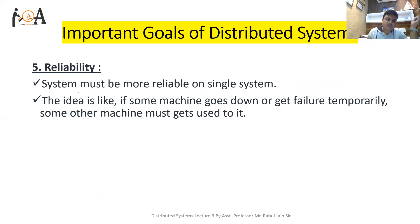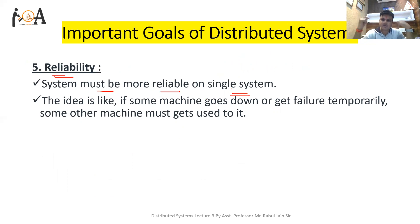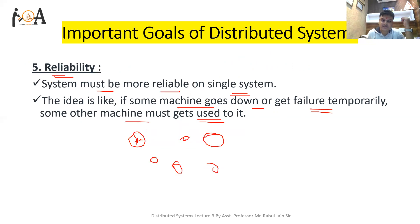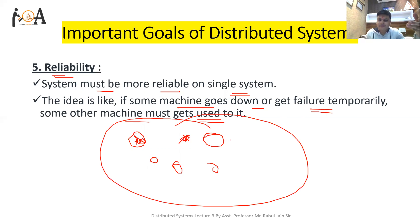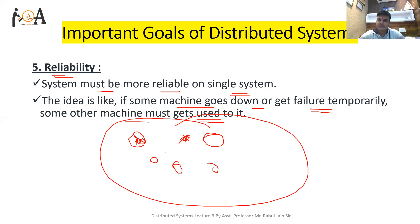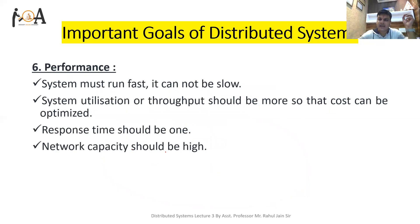The next important goal is reliability. The system must be more reliable than a single system because we are working with thousands of computing devices. If some machine goes down or gets a temporary failure, some other machine must handle it. In a distributed system, various machines are there — suppose machine A or machine B fails; the system must recover that failure. Another machine can replicate the resource so the user cannot feel it is not a single system. The system must be reliable.